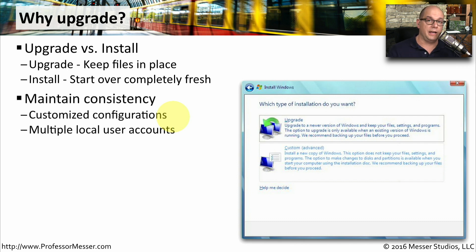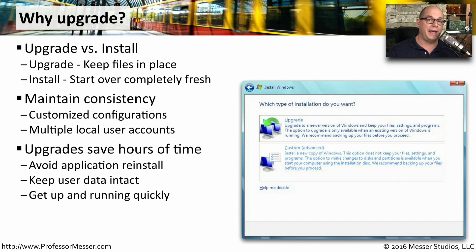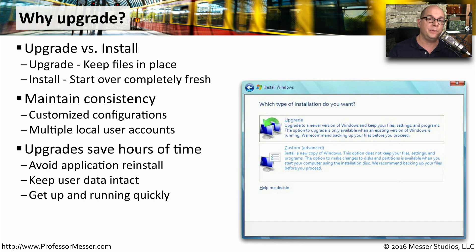If you do have the ability to upgrade, it usually makes things so much easier, especially if you have many different configurations and many different local accounts running on a single computer. You can simply install the new operating system over the existing one and keep all of these configurations in place. When you're performing a full install, you also have to install all of your applications again. Being able to perform an upgrade means you don't have to go through hours of new application installs — your data stays in the same place, and you're able to get up and running very quickly.